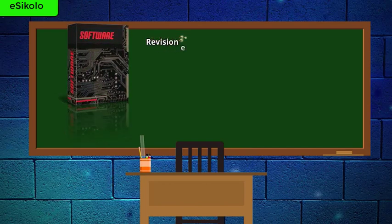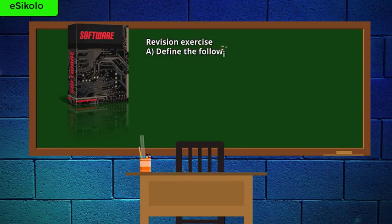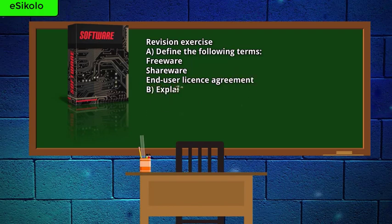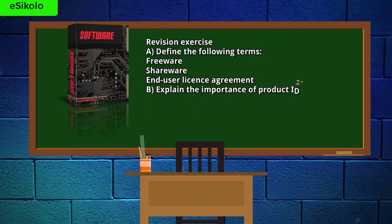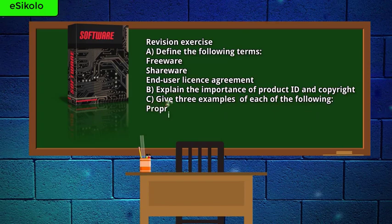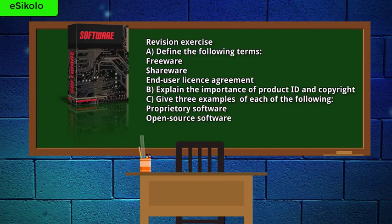Revision exercise. A: Define the following terms — freeware, shareware, and end-user license agreement. B: Explain the importance of product ID and copyright. C: Give three examples of each of the following — proprietary software and open source software.